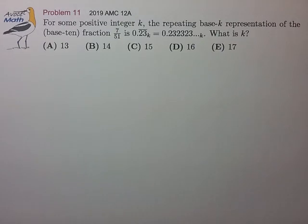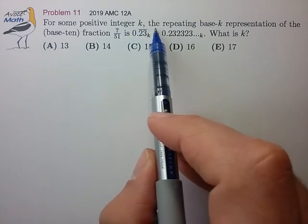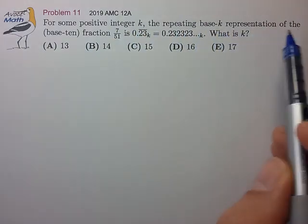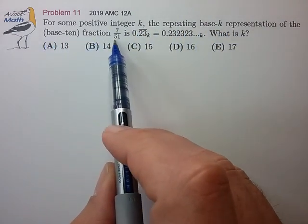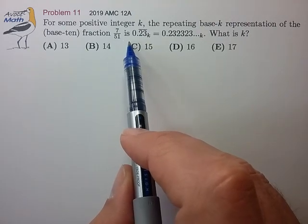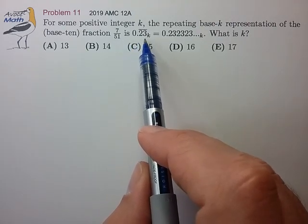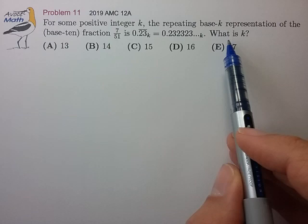Hi, this is problem 11 from the 2019 AMC 12A. For some positive integer k, the repeating base-k representation of the base-10 fraction 7/51 is 0.23̅ base k. What is k?